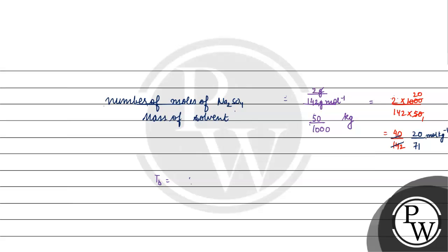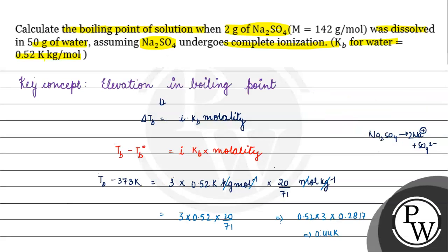Tb will be equal to 373 Kelvin plus 0.44 Kelvin, or 373.44 Kelvin. This is the boiling point of the solution. I hope you understood it well. Thank you and all the best.